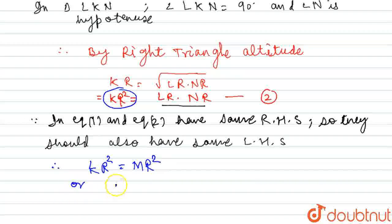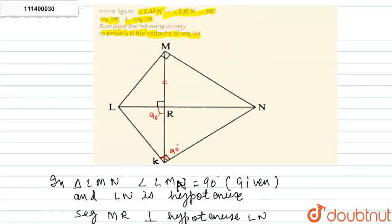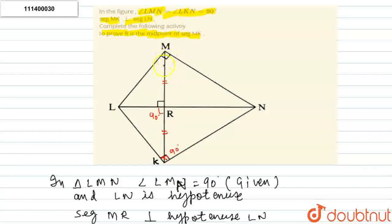KR square is equals to MR square, and we can say that MR equals KR. This is the midpoint. MR equals KR proves that R is the midpoint of MK.